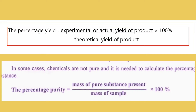The percentage yield formula is: percentage yield equals actual (experimental) yield of product divided by theoretical yield of product, multiplied by 100%. The percentage purity equals mass of pure substance present divided by mass of sample, multiplied by 100%.